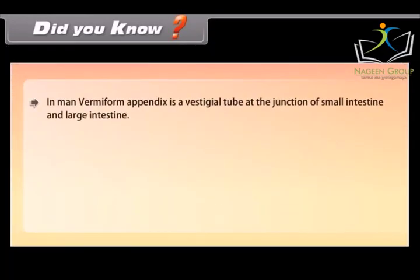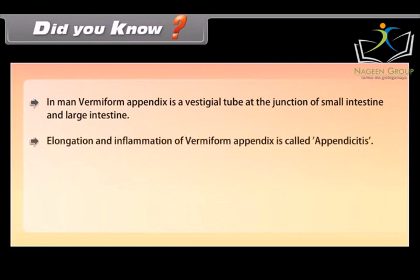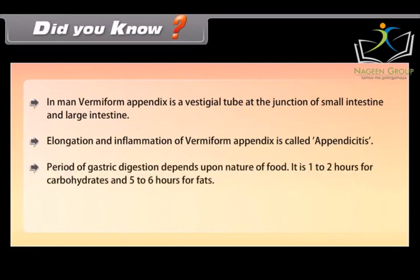Did you know? In humans, the vermiform appendix is a vestigial tube at the junction of the small intestine and large intestine. Elongation and inflammation of the vermiform appendix is called appendicitis. The period of gastric digestion depends on the nature of food: it is 1 to 2 hours for carbohydrates and 5 to 6 hours for fats.